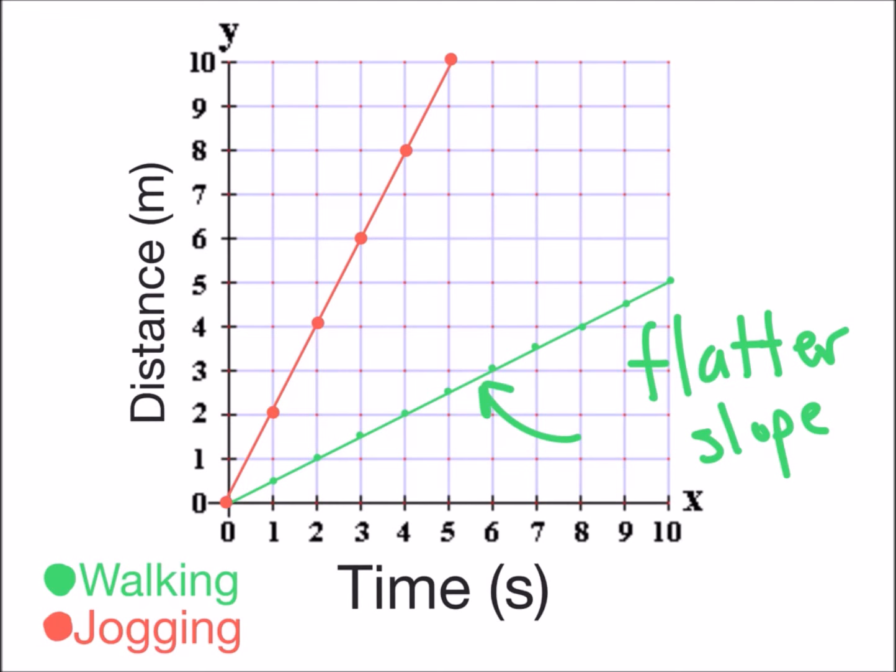Notice how the green line is a flatter, more horizontal slope and the red line is a steeper, more upright slope. What we're going to do is compare the speeds of those using numbers.